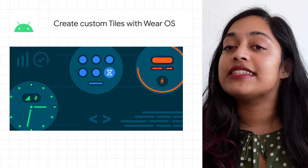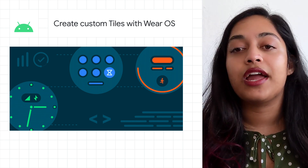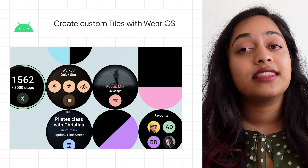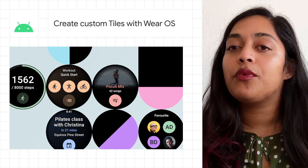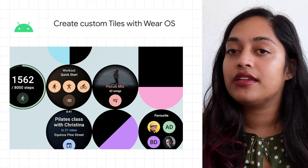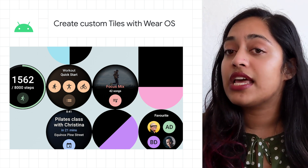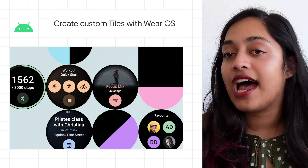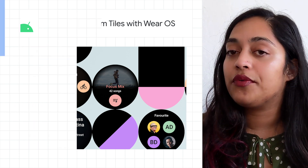The Jetpack Tiles library is now in alpha. This library enables you to create custom tiles on Wear OS smartwatches. These custom tiles will become available to users later this spring when we roll out the corresponding Wear OS platform upgrade. Tiles can be designed for many use cases, like tracking the user's daily activity progress or sending a message to a favorite contact. Tiles can be tapped to open a related app on the watch or phone.